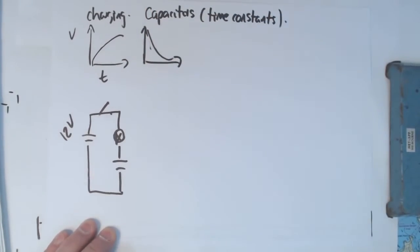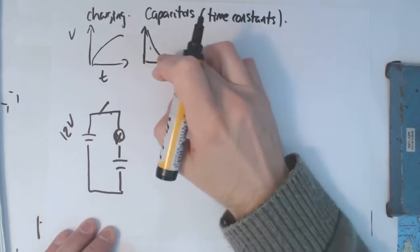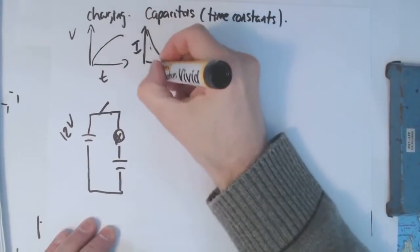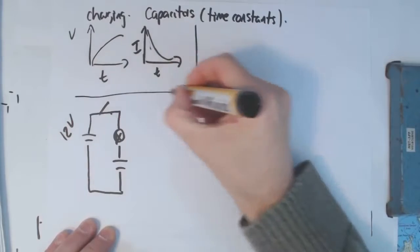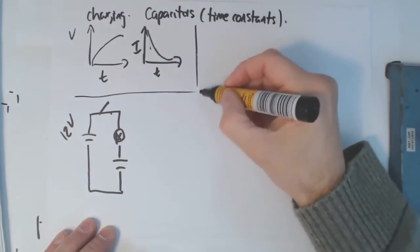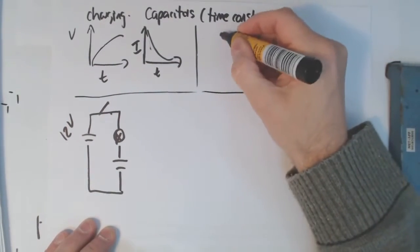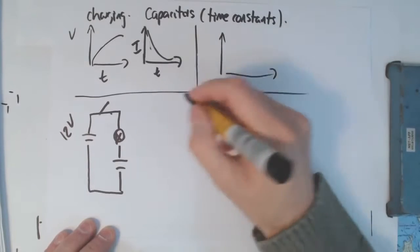So we've got two curves, the discharge curves. Not the discharge, but the current time graph. This is charging. And the other two graphs we've got are discharging. That's when we open the switch.